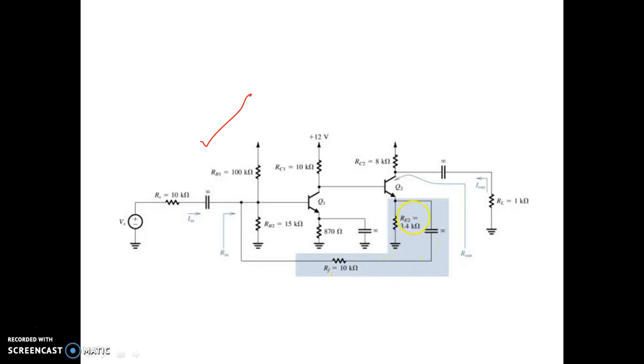See the feedback network is basically already shown by the colored box. So obviously you just have to determine the sampling network and the mixing network.